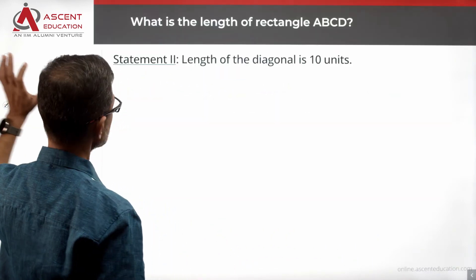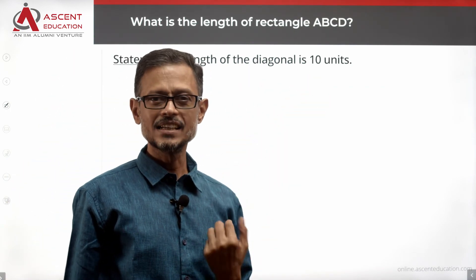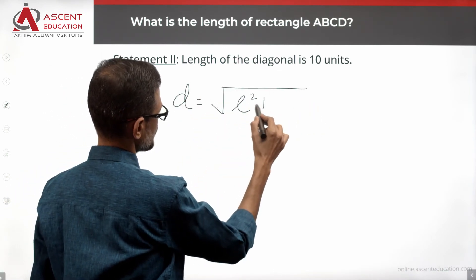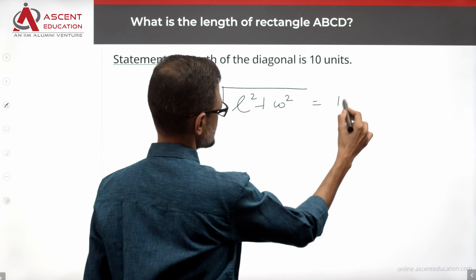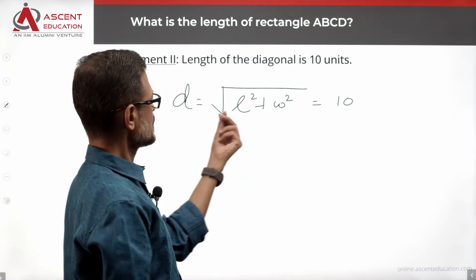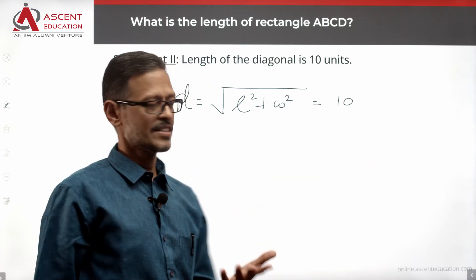Statement 2 alone, what data does it tell us? Length of the diagonal is 10 units. Rectangle's diagonal formula: square root of L square plus W square is equal to 10. Just look at it. This is two variables and one equation. More than one possibility will exist which will give us this answer.